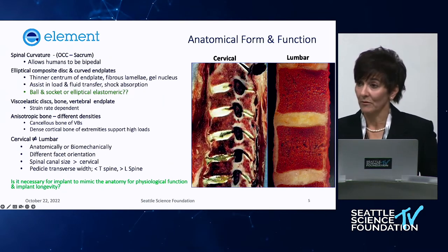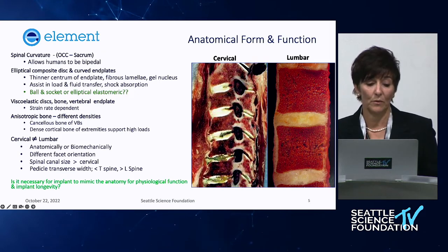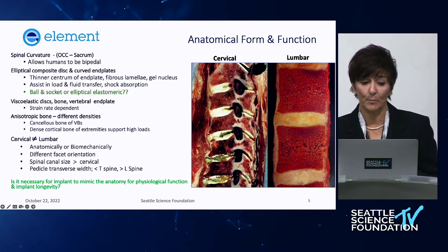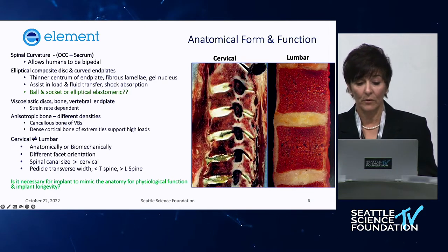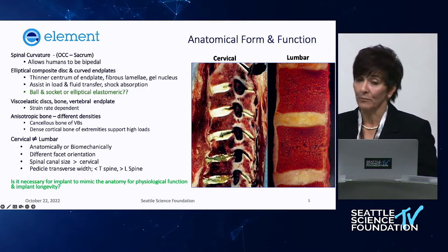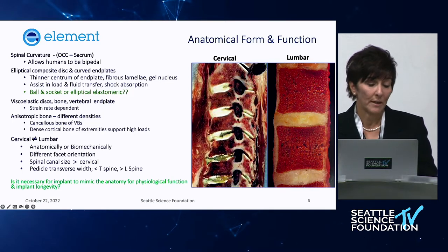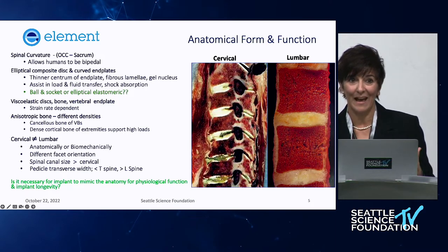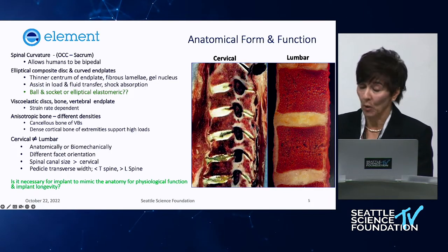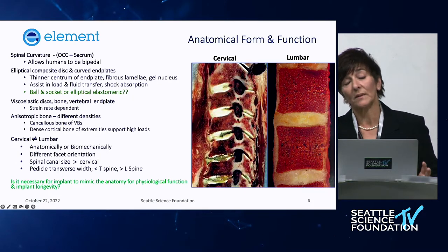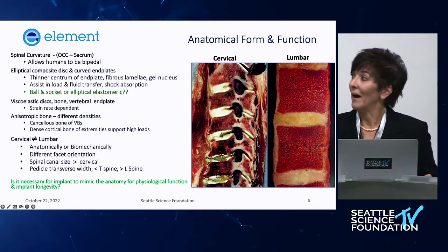I love using Rauschning's cryo-sections through the cervical and lumbar spine — they're beautiful when you think about our anatomy. Our curvature — cervical, thoracic, lumbar, sacral — allows us to be bipedal. The disc is elliptically shaped, a composite viscoelastic material that is strain-rate dependent: load it fast and it behaves differently than if you load it slowly. Bone is anisotropic — not uniformly distributed. In humans, there's great variability as we age in both our discs and our bone.